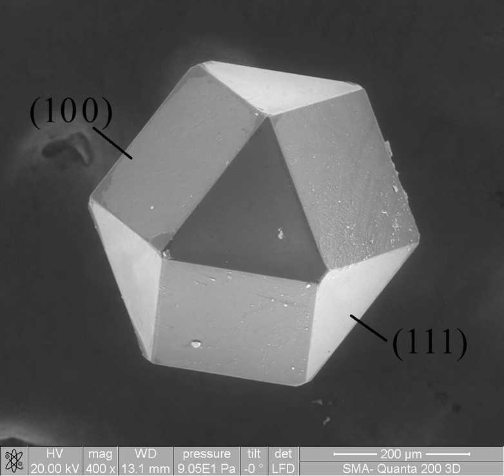Thermodynamics is concerned with heat and temperature and their relation to energy and work. It defines macroscopic variables, such as internal energy, entropy, and pressure, that partly describe a body of matter or radiation. It states that the behavior of those variables is subject to general constraints, that are common to all materials, not the peculiar properties of particular materials. These general constraints are expressed in the Four Laws of Thermodynamics.